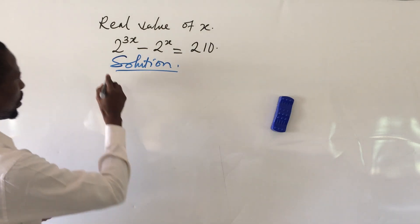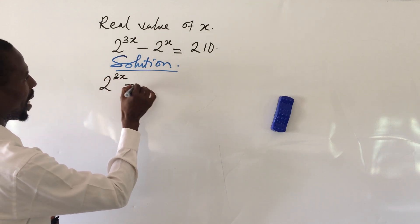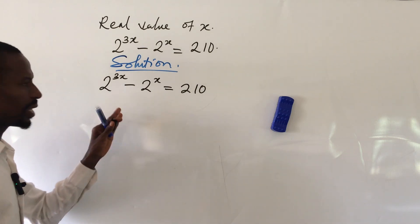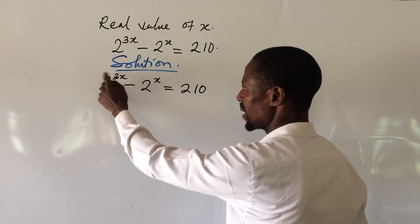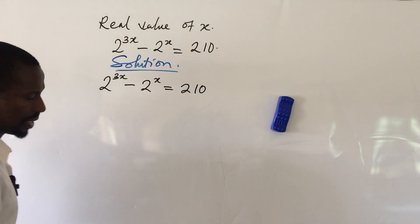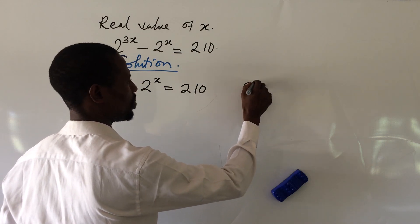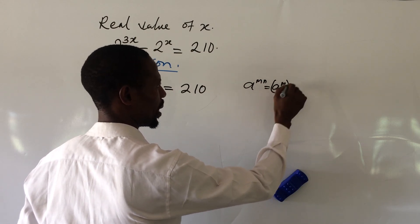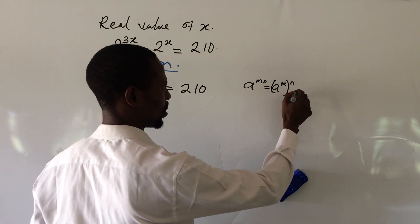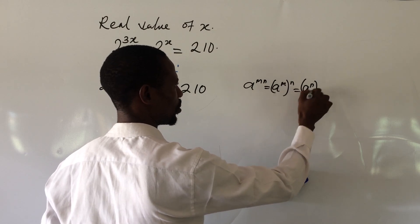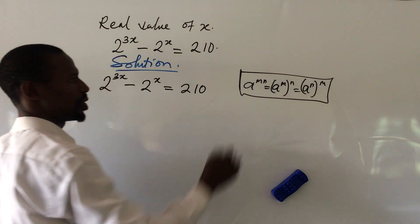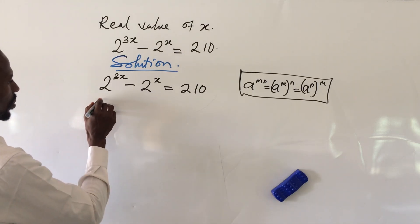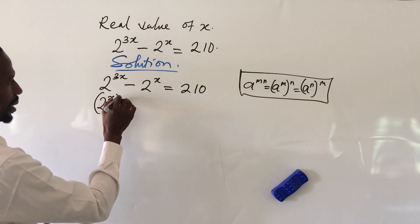Let's put down our equation: 2 to the power of 3x minus 2 to the power of x equals 210. Now, looking carefully, we can rewrite this expression using the law of indices, which says a to the power of mn equals a to the power of m, bracket n. Applying this rule, we can rewrite 2 to the power of 3x as 2 to the power of x, all in bracket, to the power of 3.